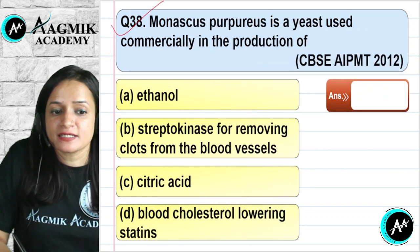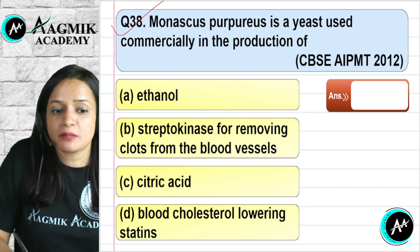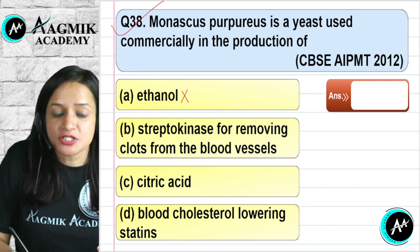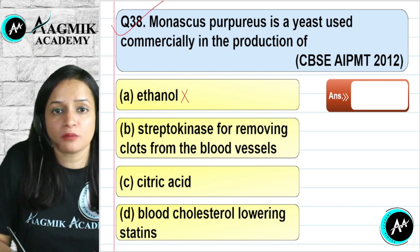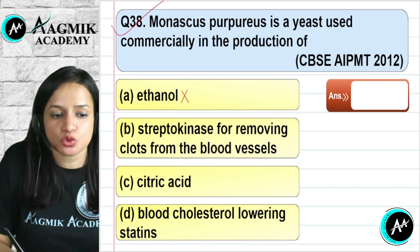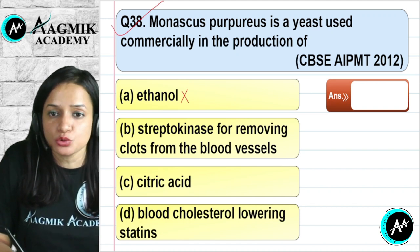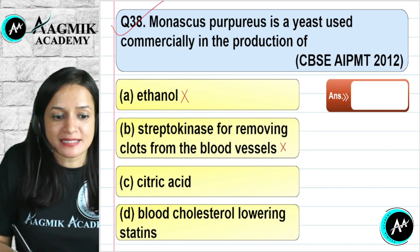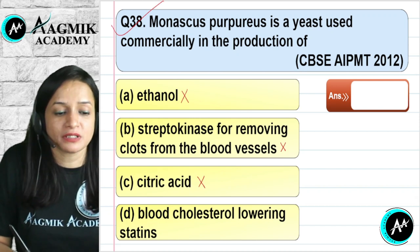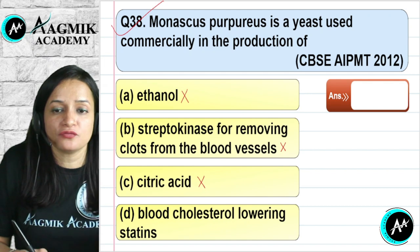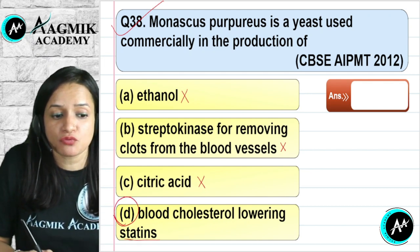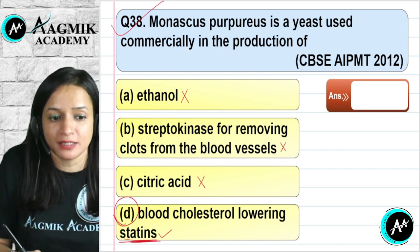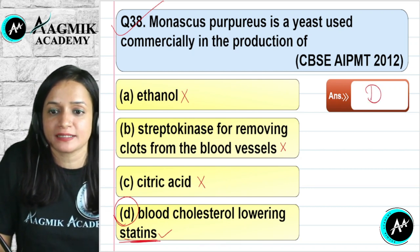Question number 38: Monascus purpureus is a yeast used commercially in the production of which compound? It is not used for ethanol. Streptokinase for clot removal is not from Monascus. Citric acid comes from bacteria, not Monascus. Monascus is used to produce statins, which are used for lowering blood cholesterol levels. The correct option is D.